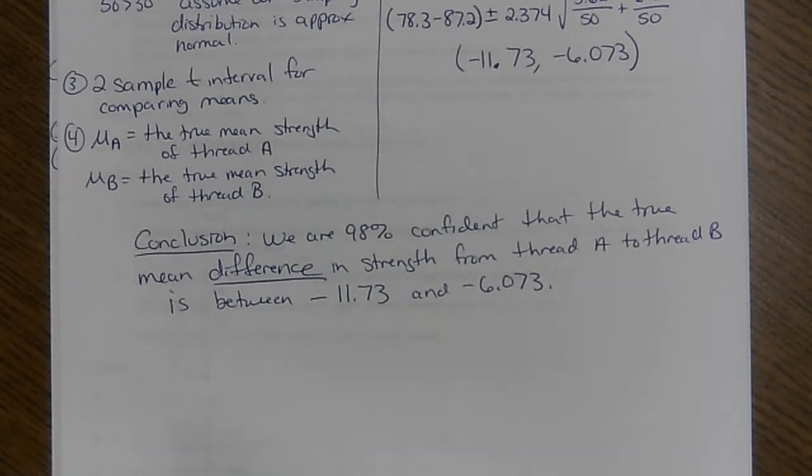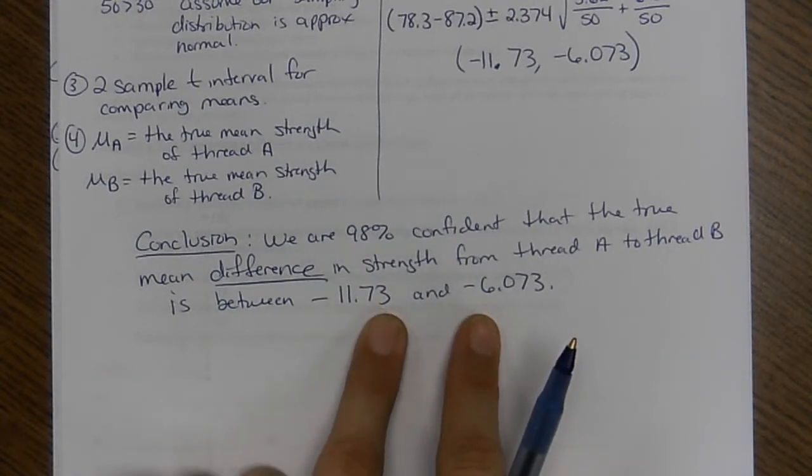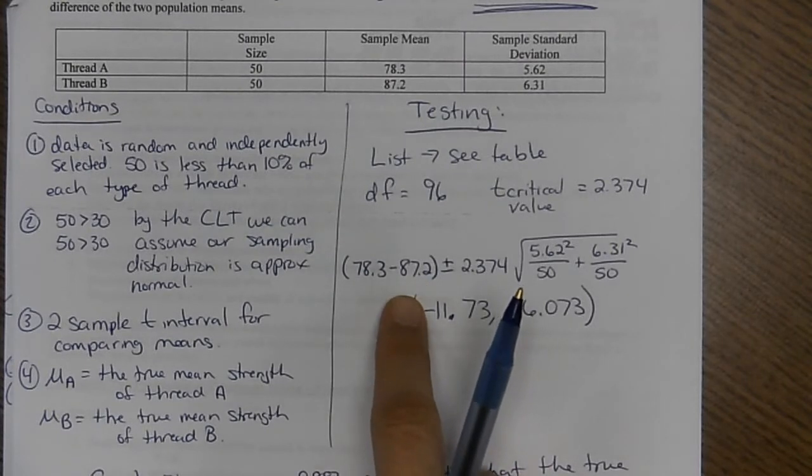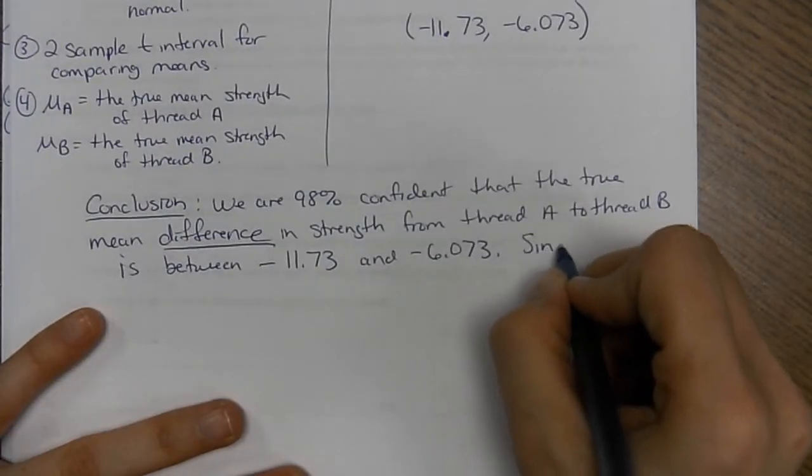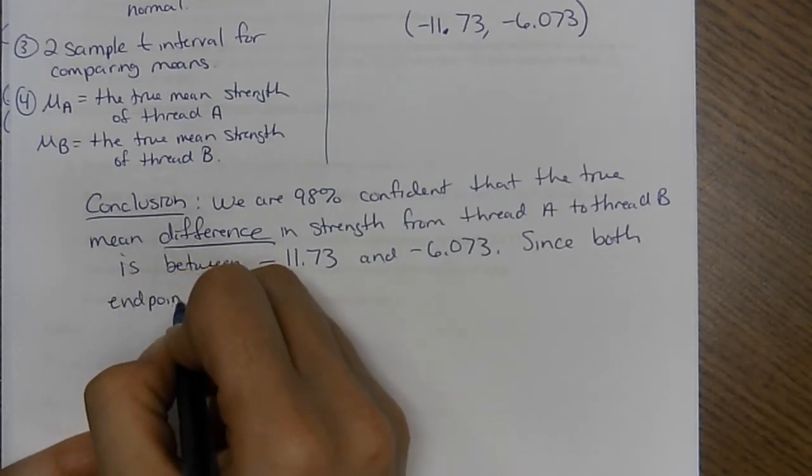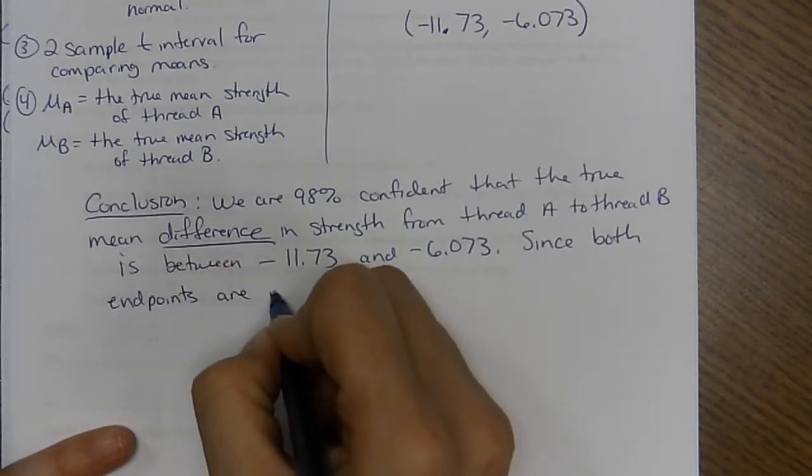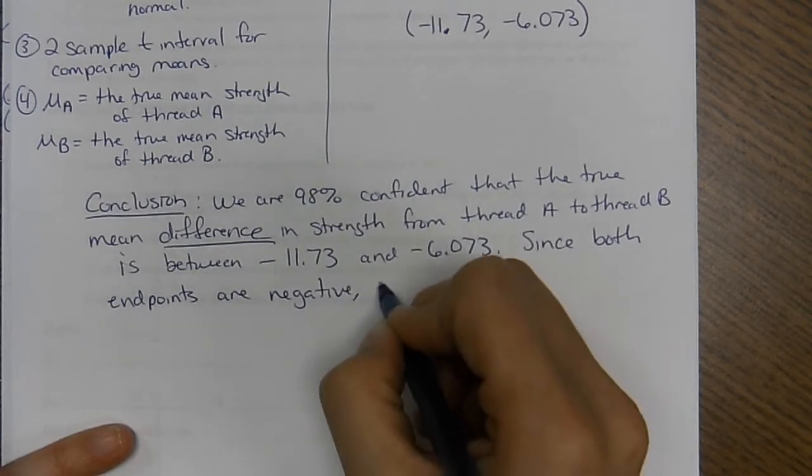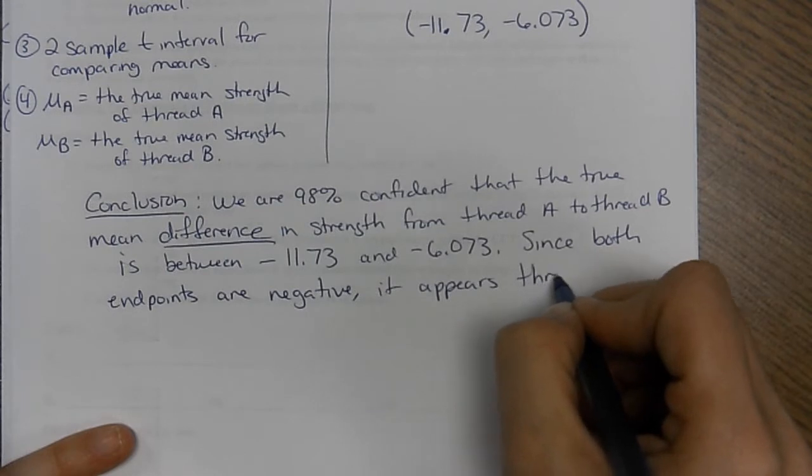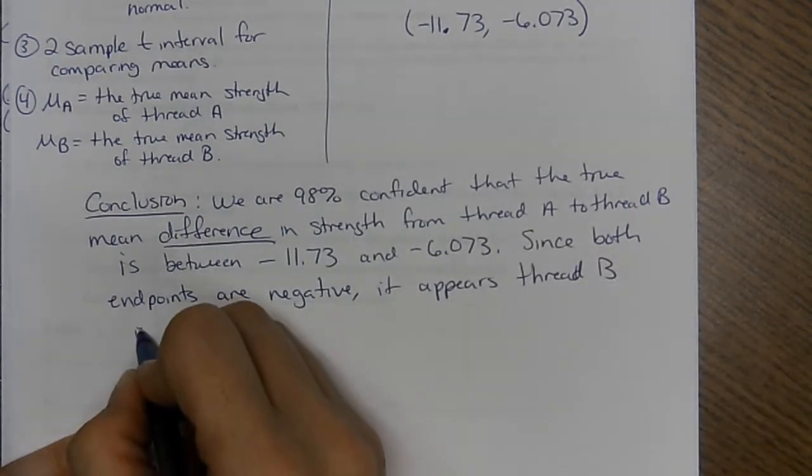So both endpoints are negative. You can kind of tell by looking at the means. So thread B, I would think, is stronger. So since both endpoints are negative, it appears thread B is stronger.